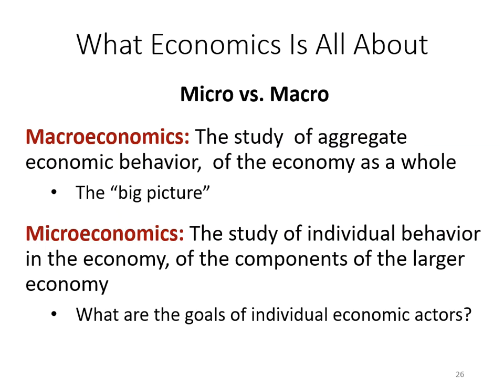In macroeconomics we might be concerned about how much money consumers spend in total on goods and services, while in microeconomics we focus on how much consumers spend on specific goods. Although macro and micro operate at different levels of abstraction, they are intricately related. Macro outcomes depend on micro behavior, and micro individual behavior is affected by macro outcomes. Everyone's behavior contributes to macro outcomes, and government policies such as interest rates and exchange rates affect our daily decision-making.